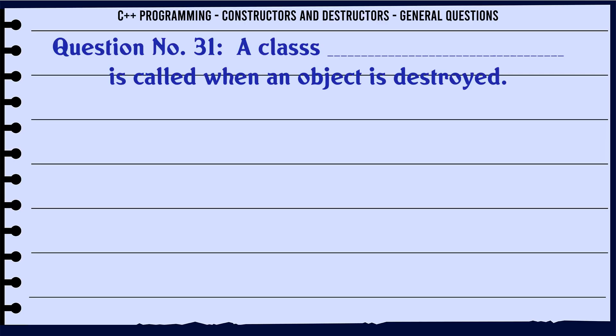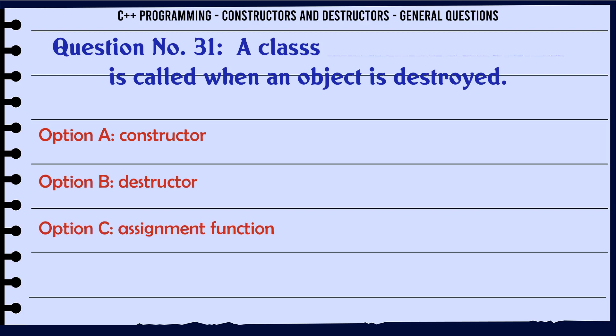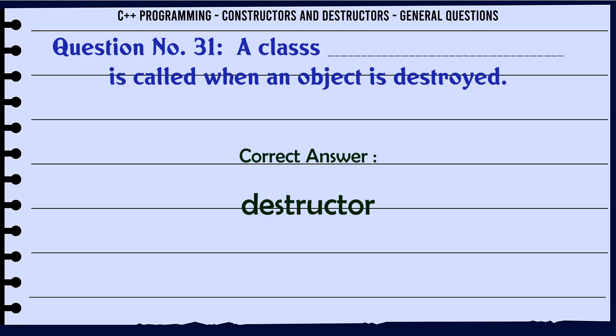A class's what is called when an object is destroyed? A. Constructor. B. Destructor. C. Assignment function. D. Copy constructor. The correct answer is Destructor.